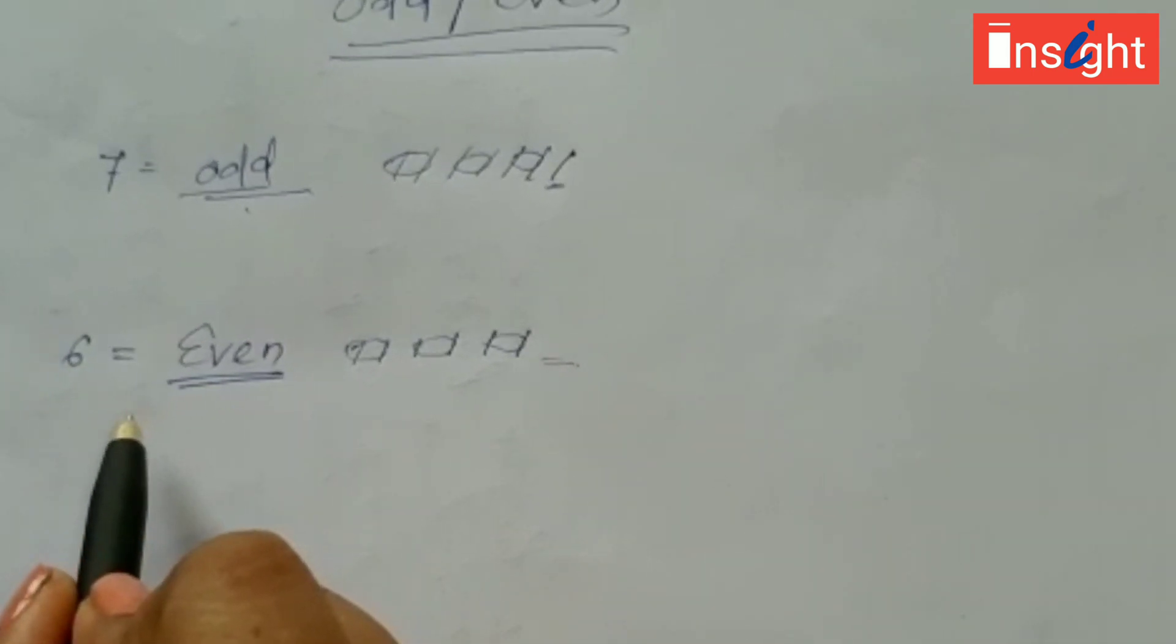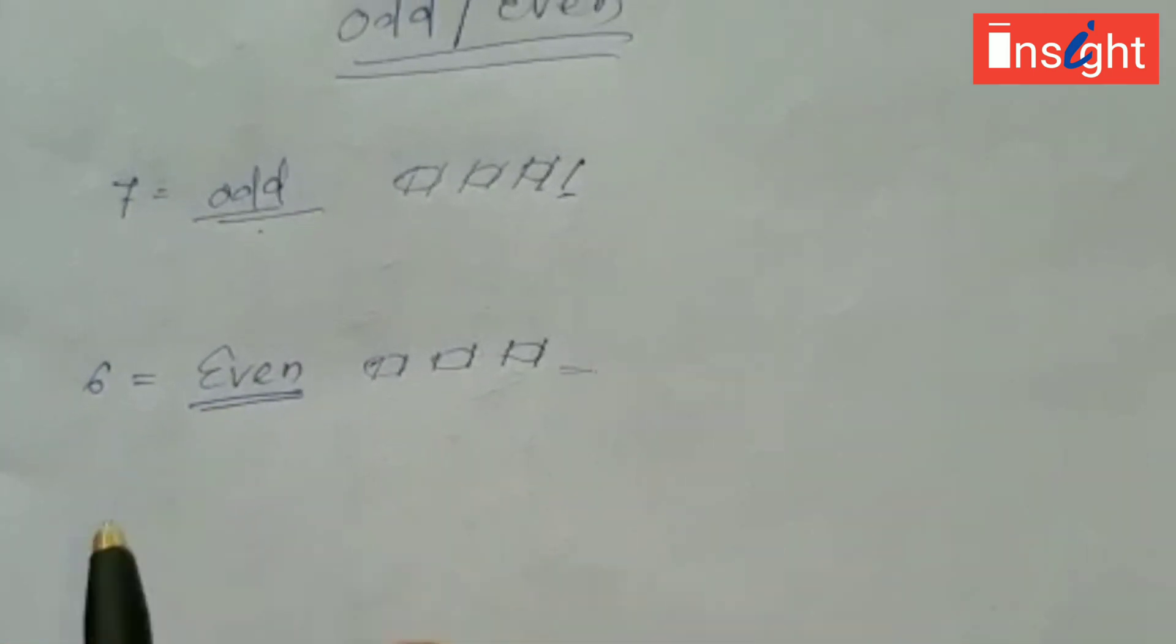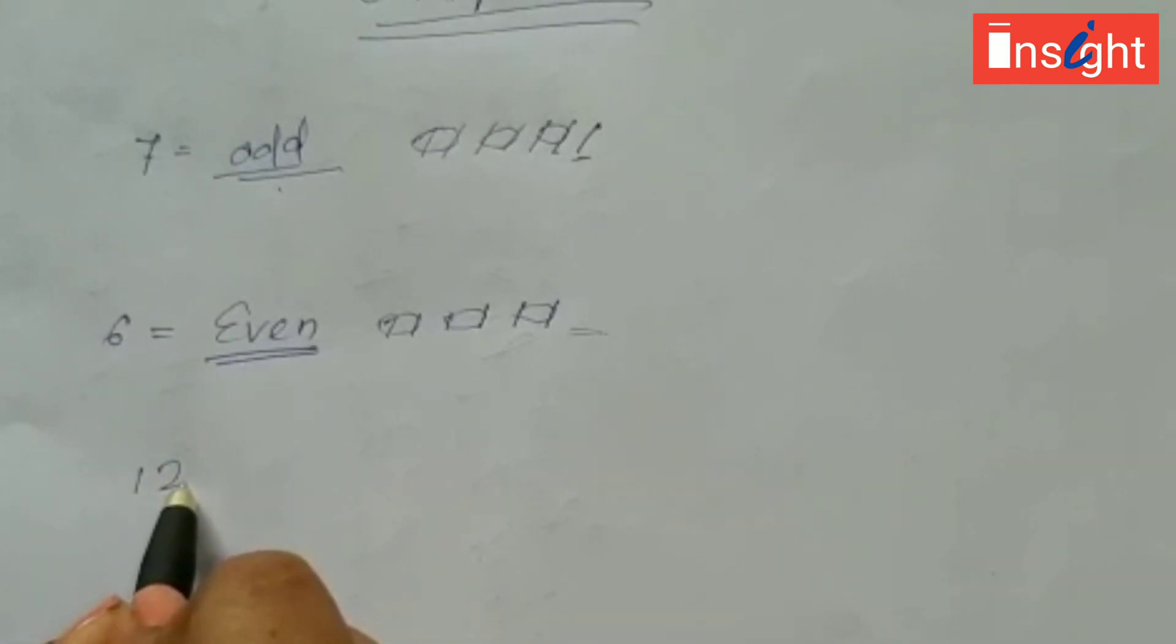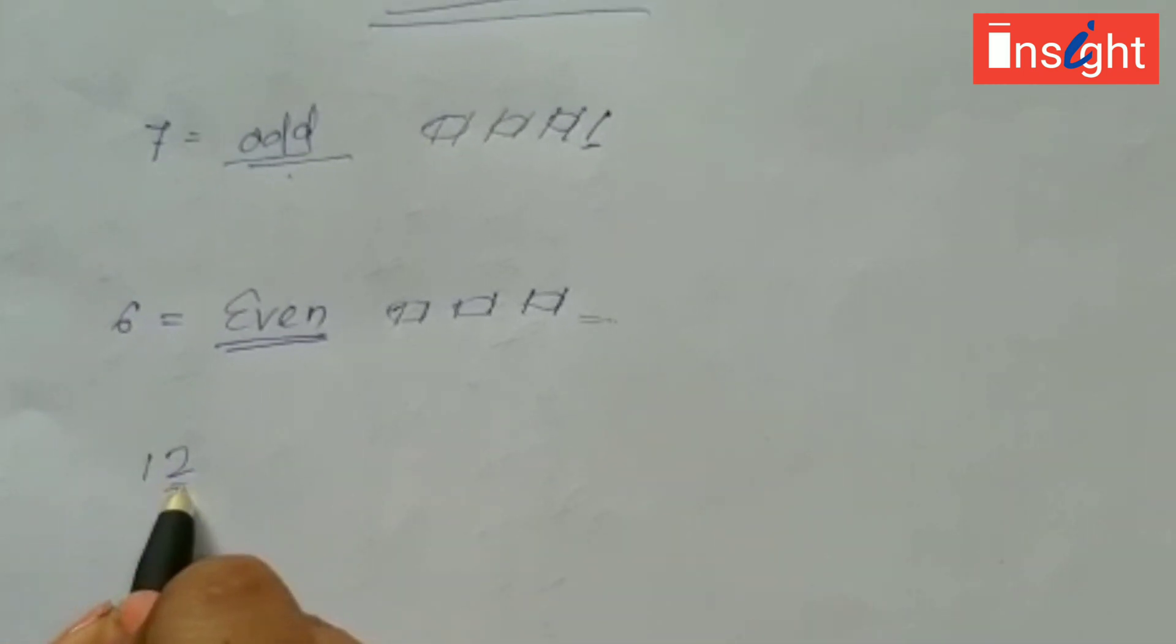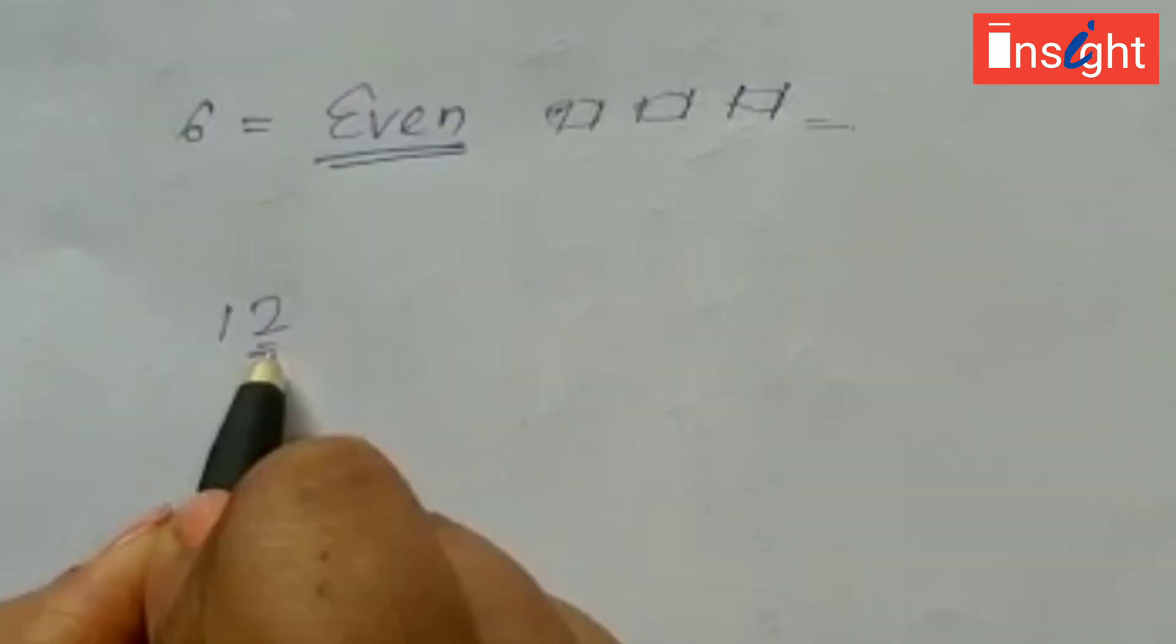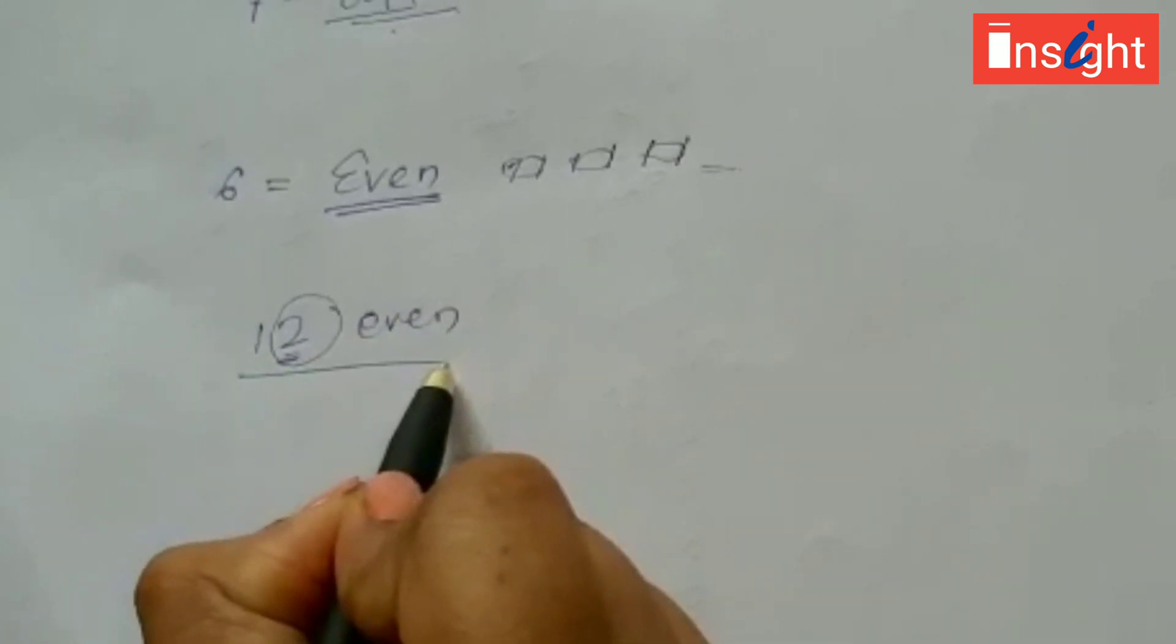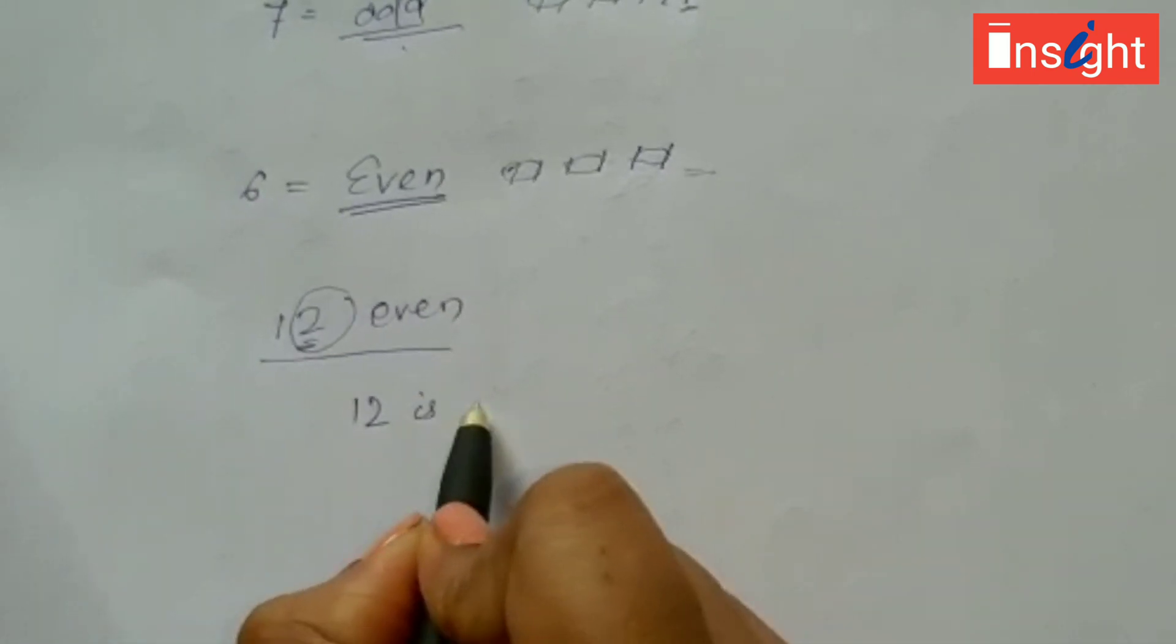So for one digit number you will do like this, but what about two digits and three digits? Take two digit number, and the last digit is here two. So if two is even number, then 12 is also even number.